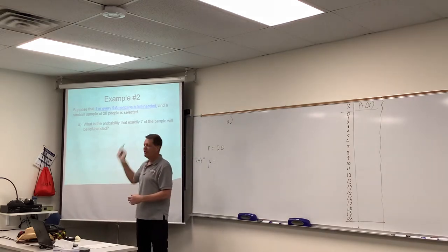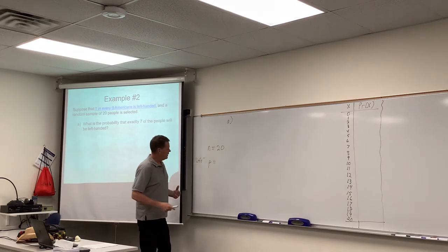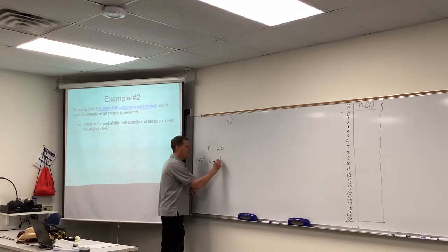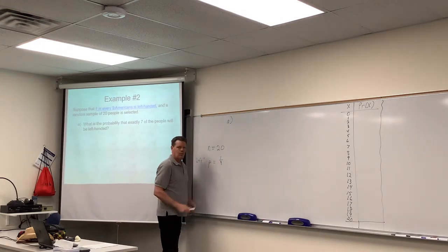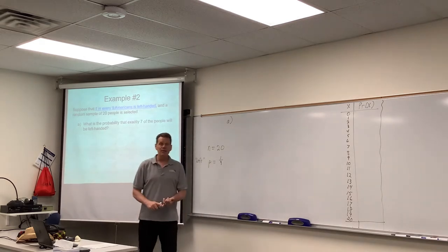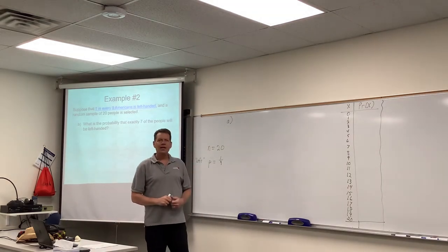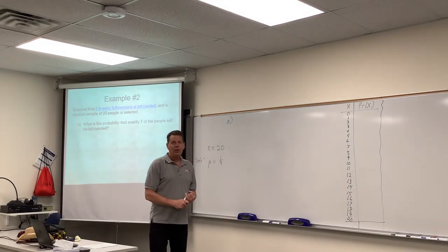And it says that one out of every nine is left-handed. So in this case, that probability would be one-ninth, one out of every nine. I want to remind you, probabilities can either be fractions like this, or decimals, or percentages.